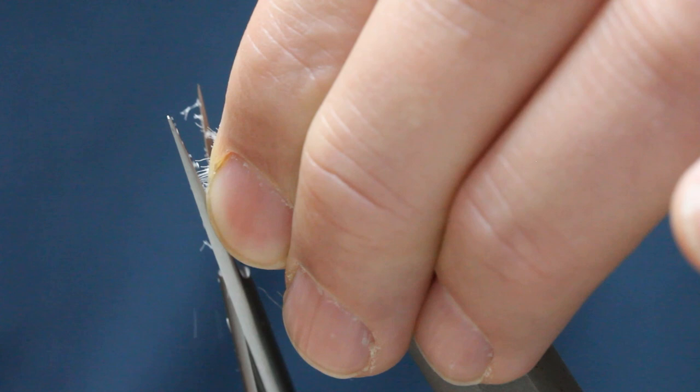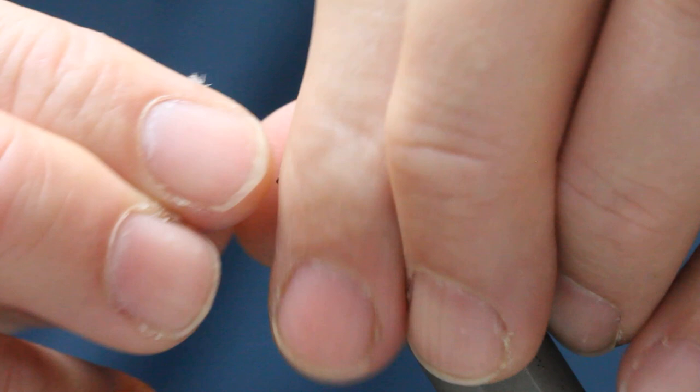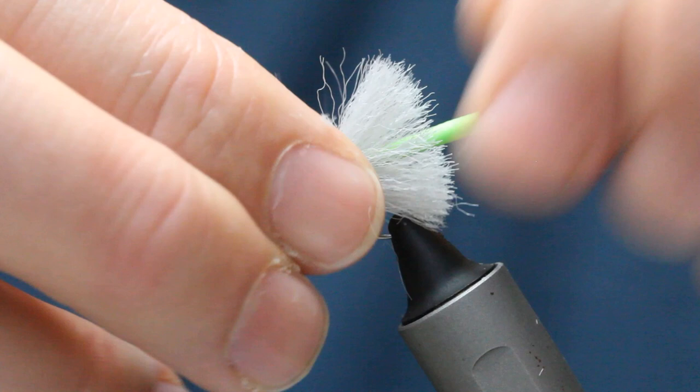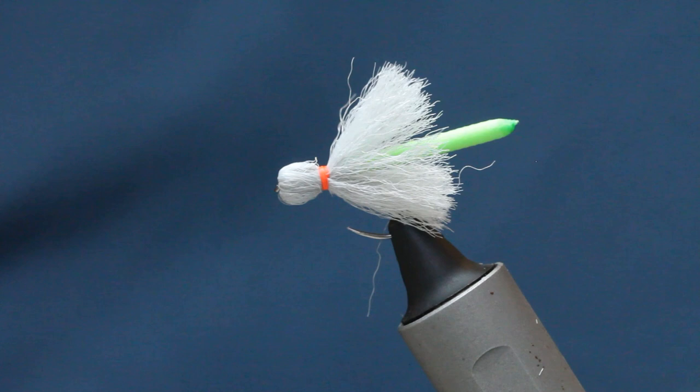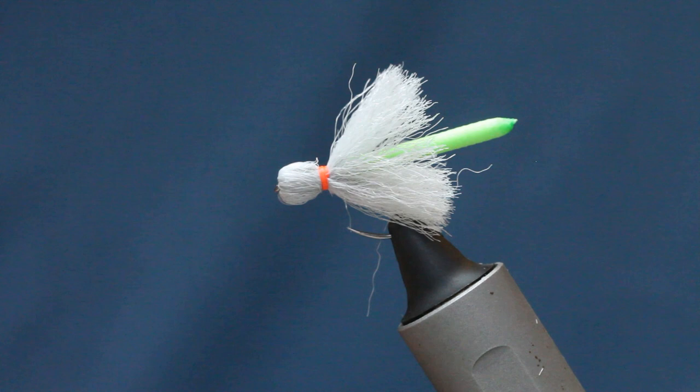And there you've got your indicator fly. You've got the perfect size with unbelievably good buoyancy. I'll show you the eye there - let's take this out, you can see the eye. It's not covered, it's just the way the angle was.